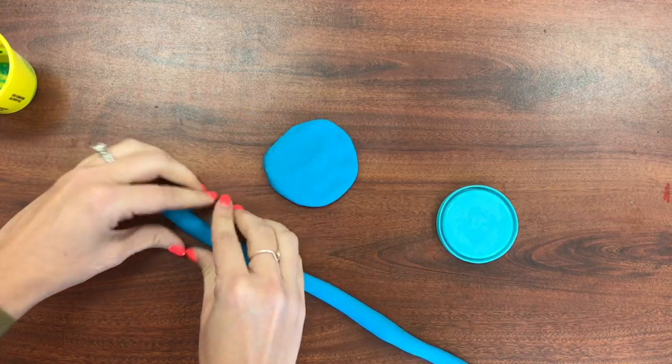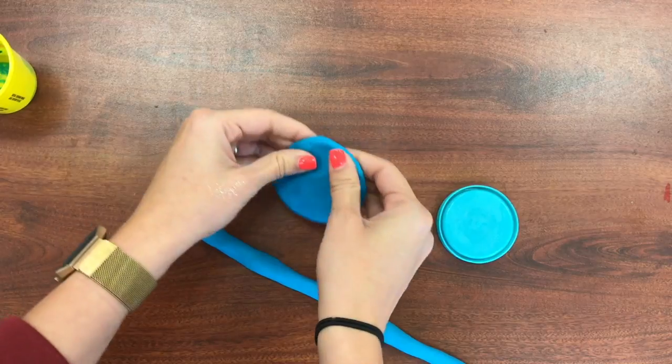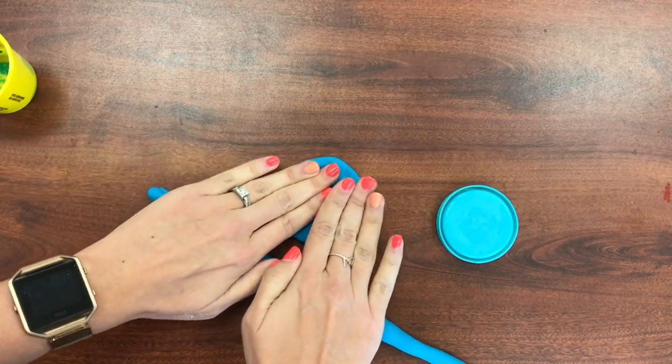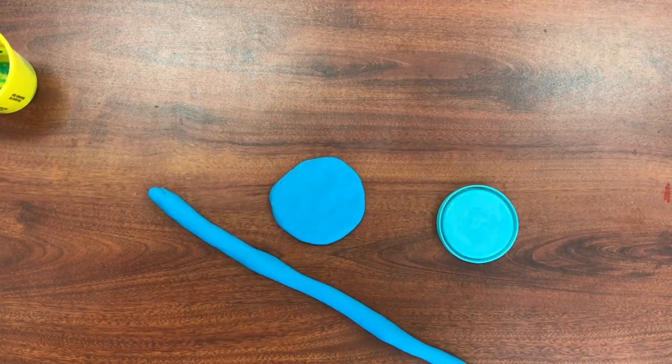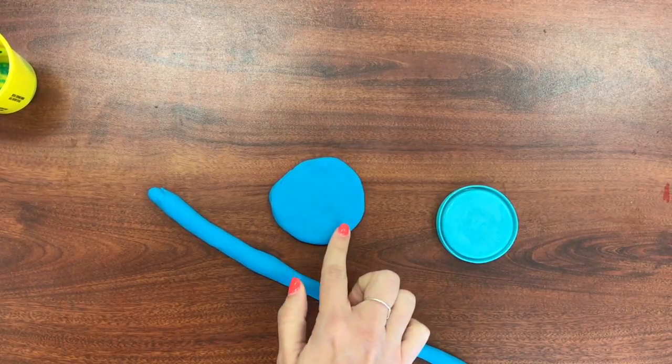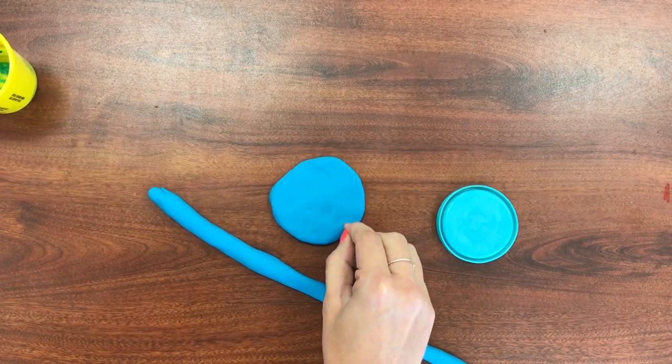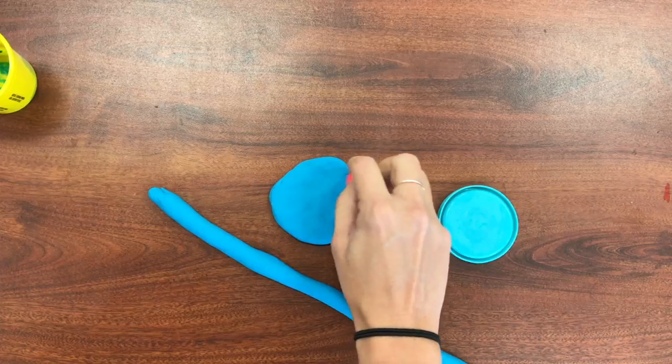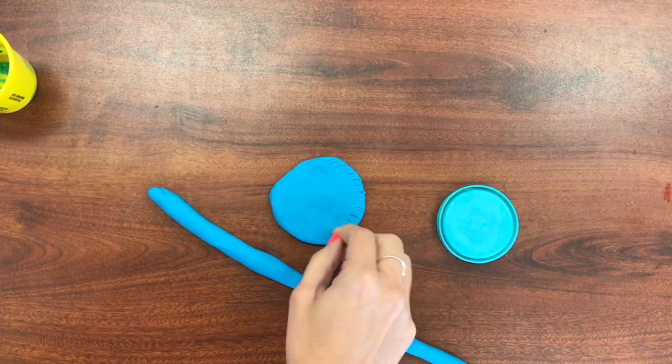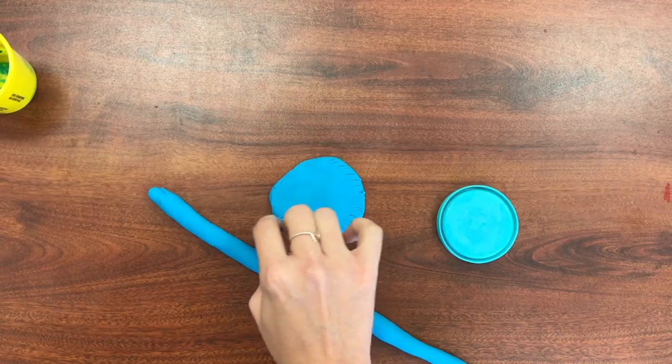And then we are going to practice making our coil pot. So what you would do if we were actually making our coil pot is you would slip and score it. We're not going to be able to slip it because slipping involves adding water. But we can score it.